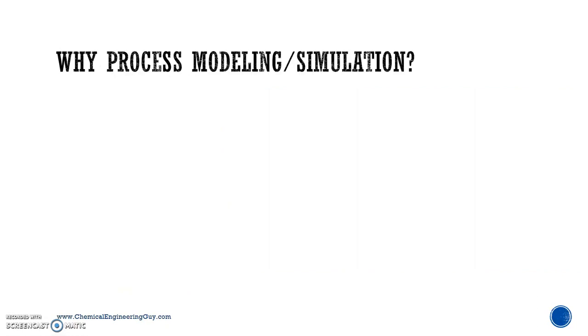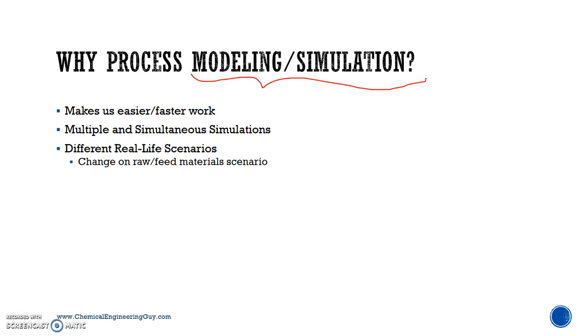Typically, this is why we use process modeling. Process modeling and simulation is very important in the chemical industry, especially to get actual data. It makes us not only easier work, but faster. We take less time to analyze the data. Then we take multiple and simultaneous processes, or process simulations. We can take different real life scenarios, so that's also good, different change in raw material, for instance.